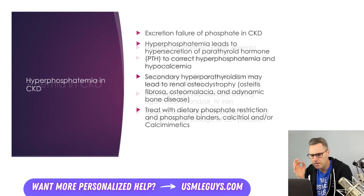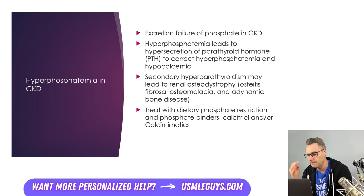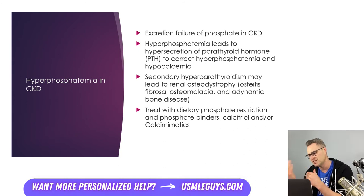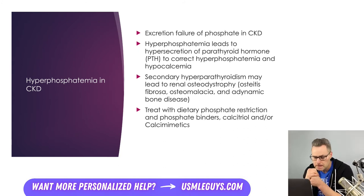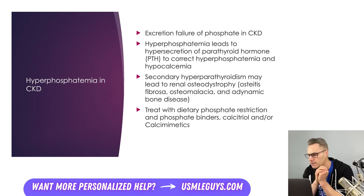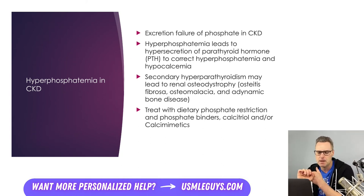Patients with CKD can develop failure to excrete phosphate, resulting in compensatory hypersecretion of PTH to correct both the hyperphosphatemia and hypocalcemia. There is also a secondary hyperparathyroidism that can cause renal osteodystrophy, characterized by osteitis fibrosa, osteomalacia, and/or adynamic bone disease. This is managed by restricting dietary phosphate and giving the patient phosphate binders, calcitriol, and/or calcium analogs.